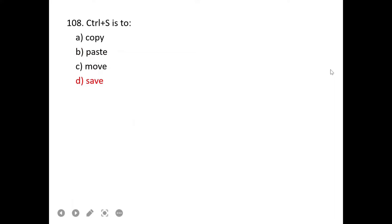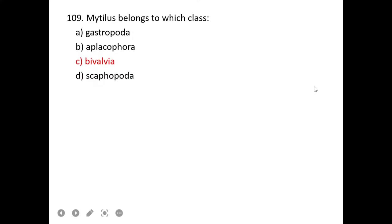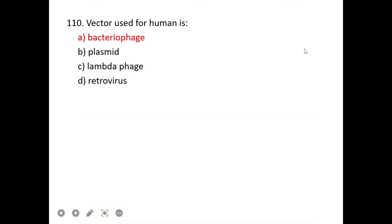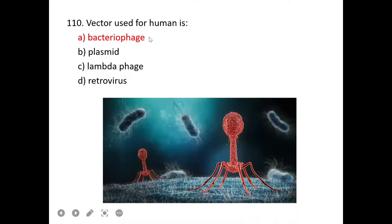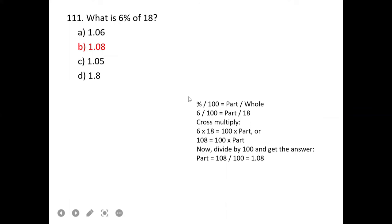Vectors used for humans: bacteriophage is used for humans. What is 6% of 18? The formula we apply is percentage over 100 equals part over whole. So 6 over 100 equals part over 18. If we cross multiply, 6 into 18 divided by 100 gives us answer 1.08. B is correct.